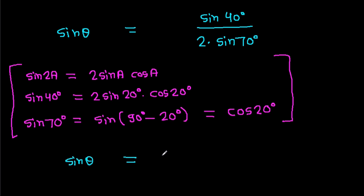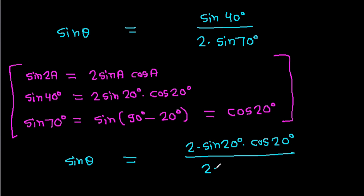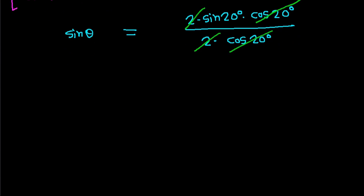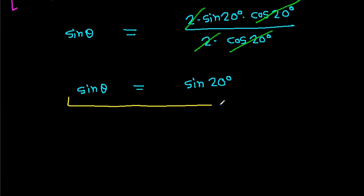So sin theta equals 2 times sin 20 degrees times cos 20 degrees over 2 times sin 70 degrees, and since sin 70 degrees equals cos 20 degrees, the 2s and cos 20 degree terms cancel. So we get sin theta equals sin 20 degrees, that means theta equals 20 degrees. Thank you.